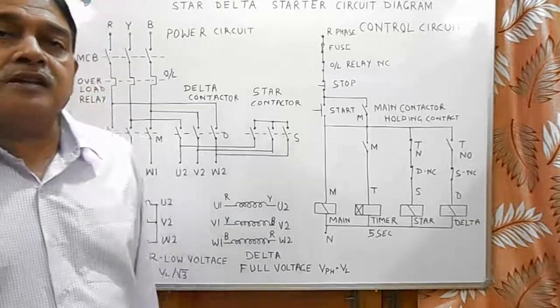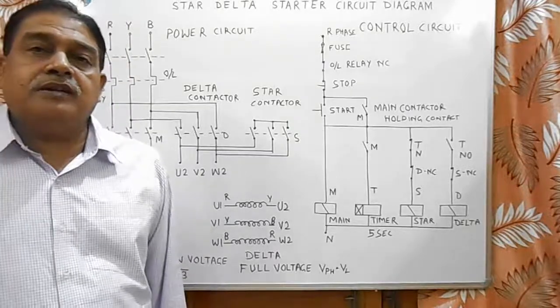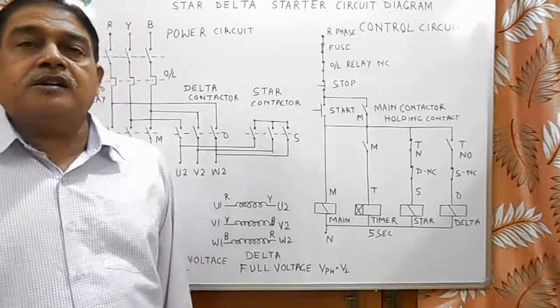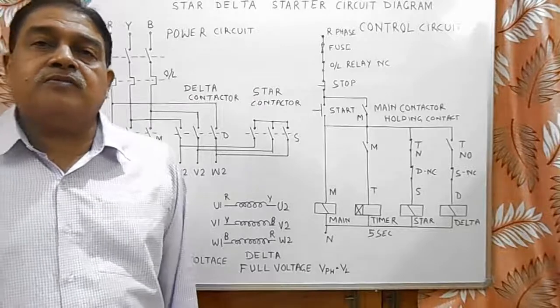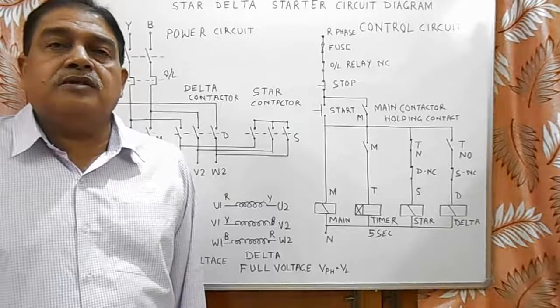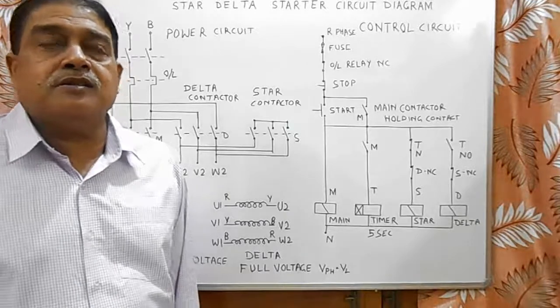This star-delta starter is suitable for delta connected motors and is generally used in domestic areas for motors above 5 HP. This is generally used in flour mills and rice mills.